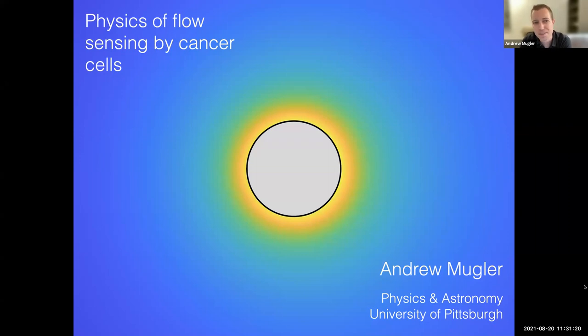So I'm going to talk today about the physics of a particular mechanism by which cancer cells sense fluid flow. And what I'm showing you here actually is one of the main results for today. It's the output of a model that I'll describe, and it's showing the concentration of a particular molecule outside of a cell. The cell is secreting this molecule in the presence of a background flow. And I think if I were to ask you what direction the flow is going, you'd be hard-pressed to tell me.